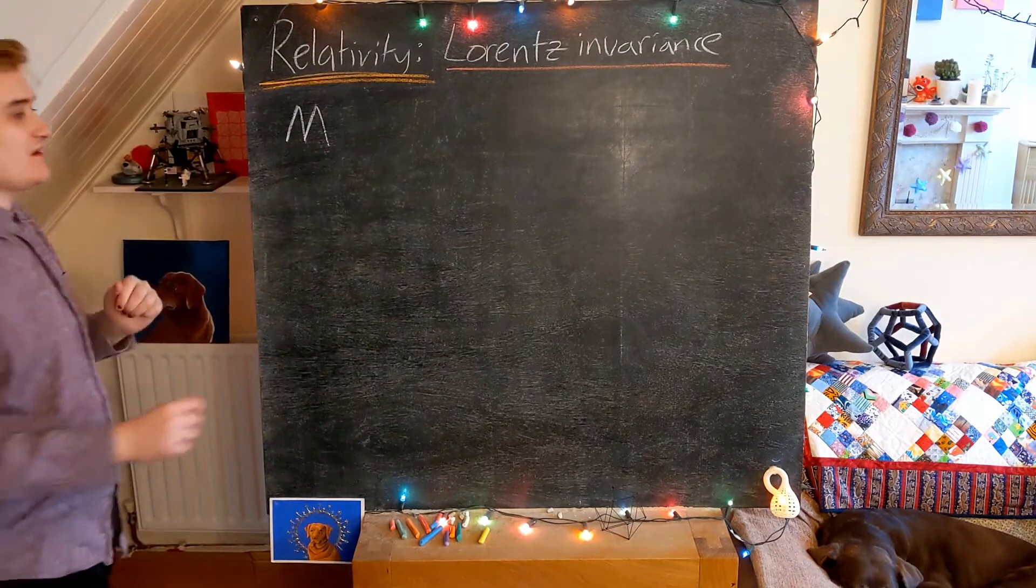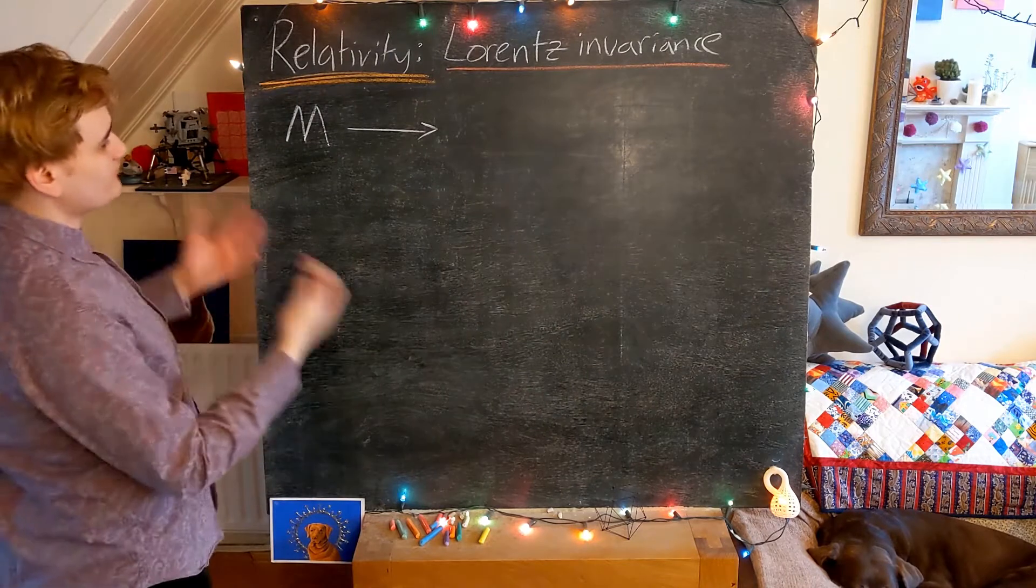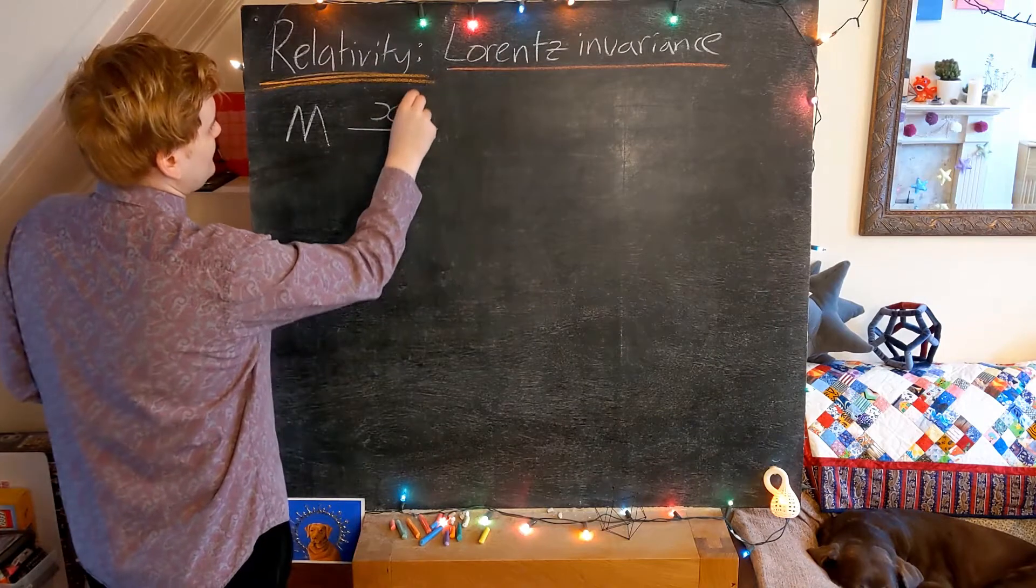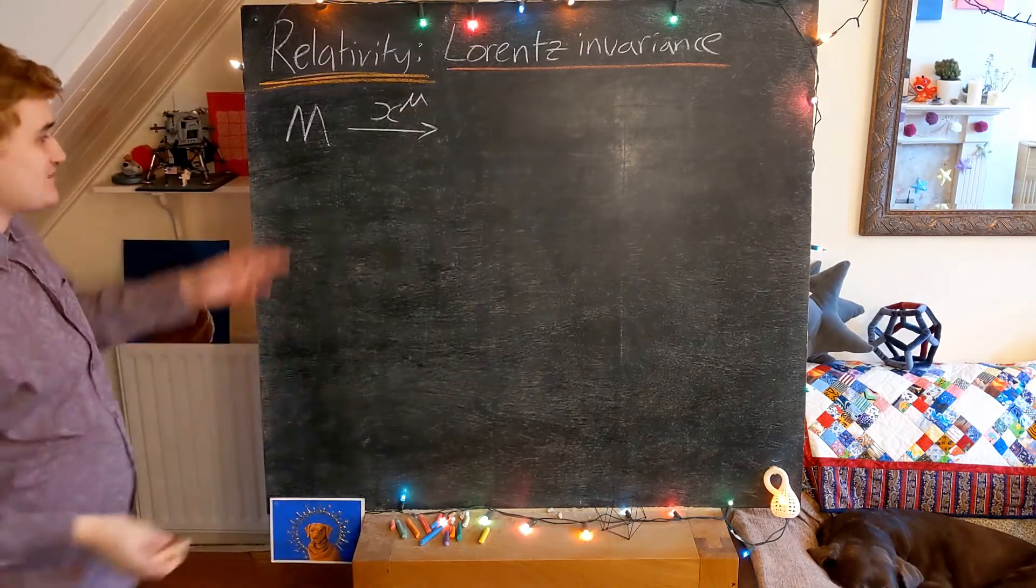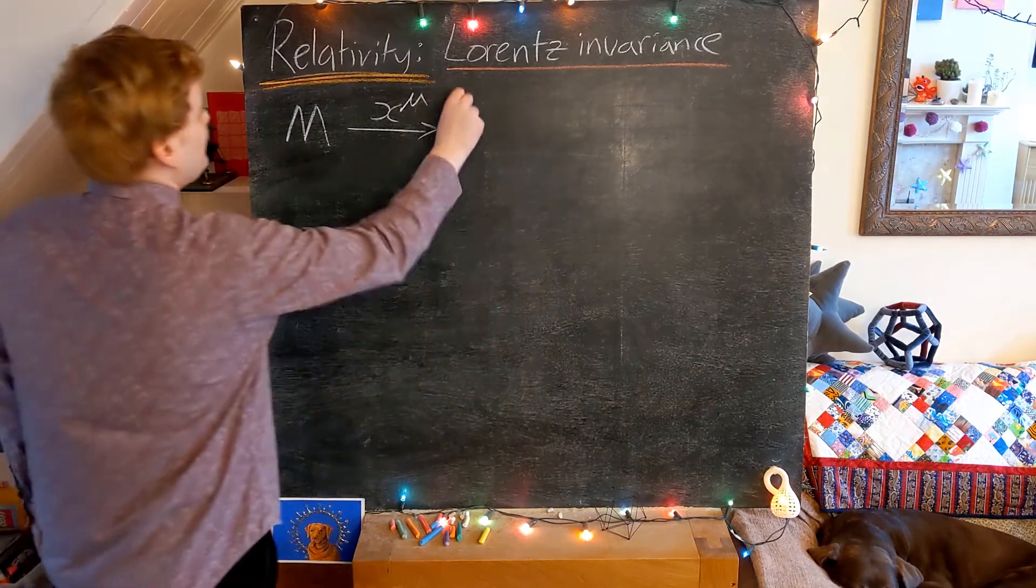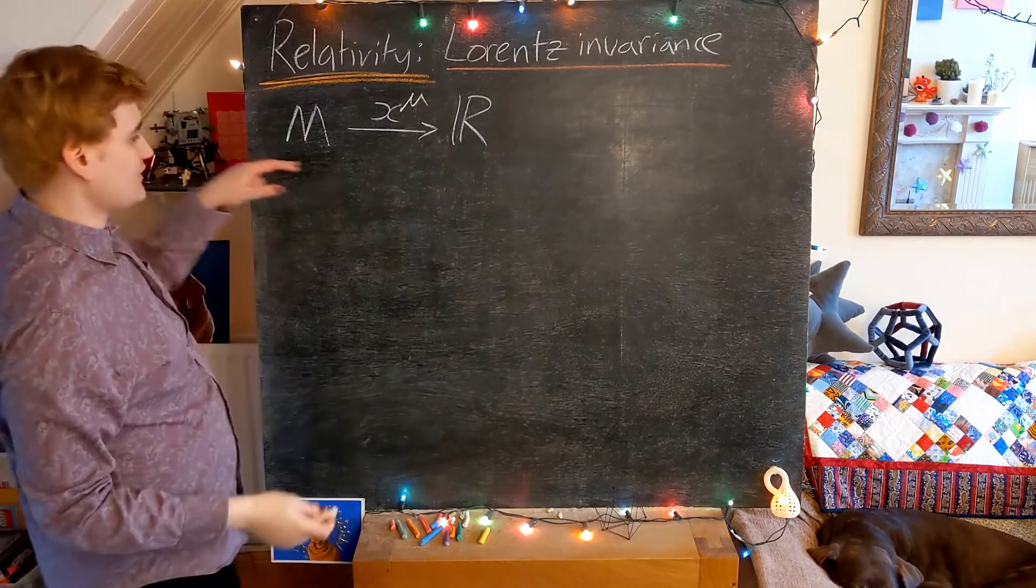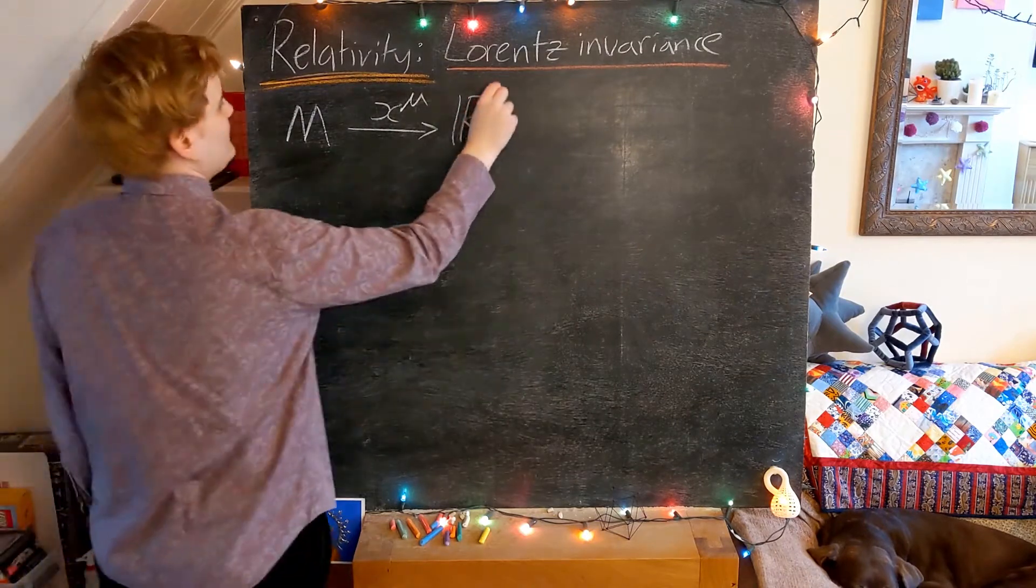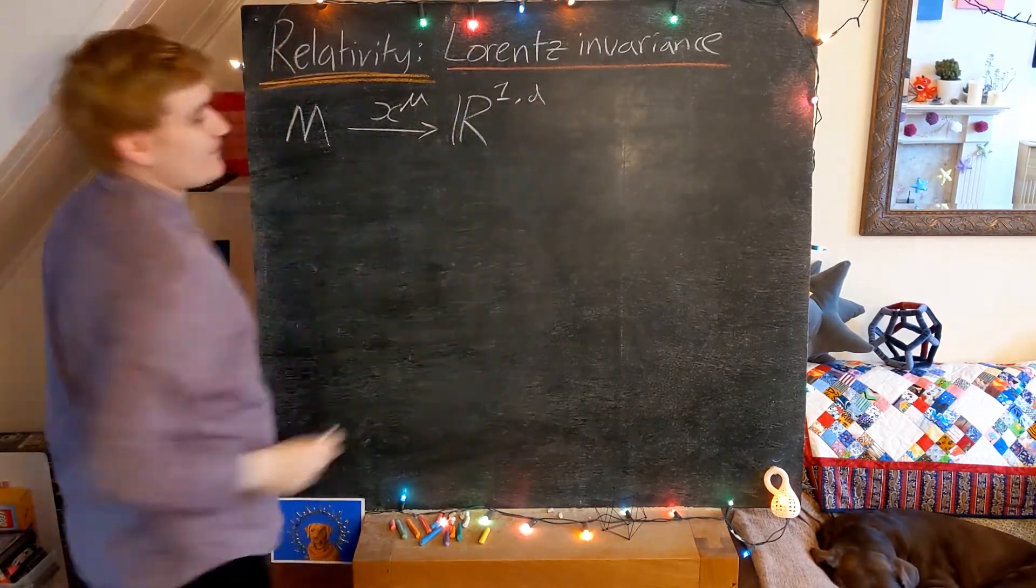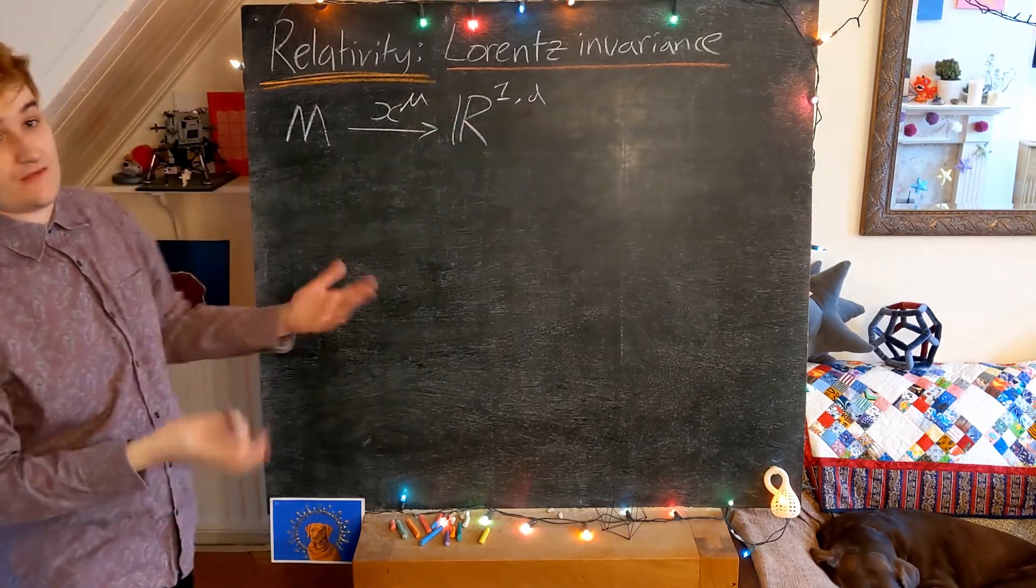But then on this space-time manifold we construct coordinates, or what we've been calling a reference frame in relativity. So this is just a set of maps that maps the points of our space-time manifold into a copy of the real numbers that has the same dimension as our space-time. So I'll express that as a 1 and then a d for the number of spatial dimensions. This d is just going to be 3 for our universe.